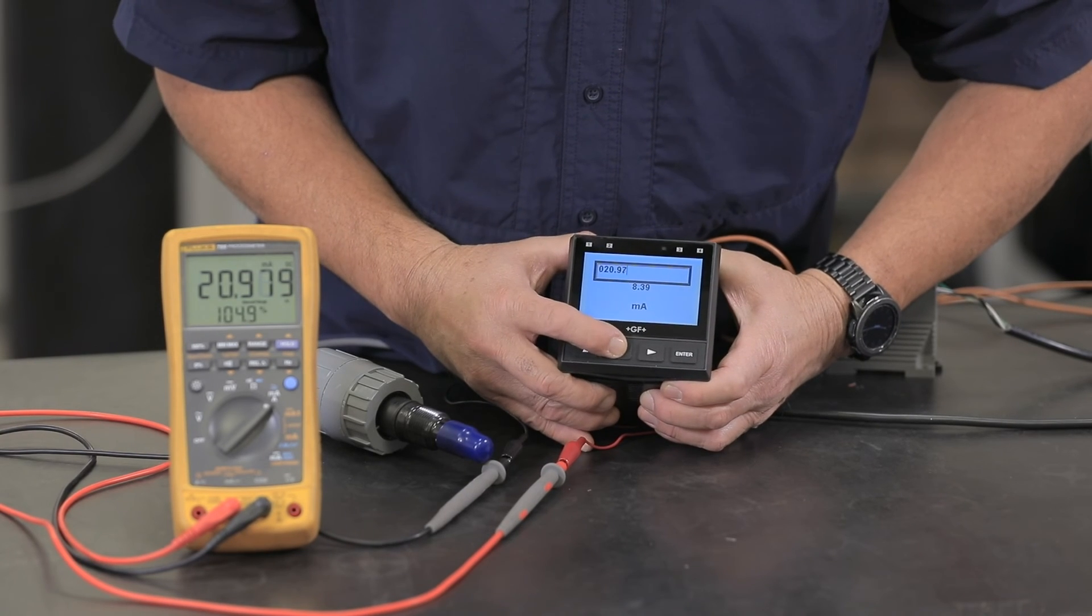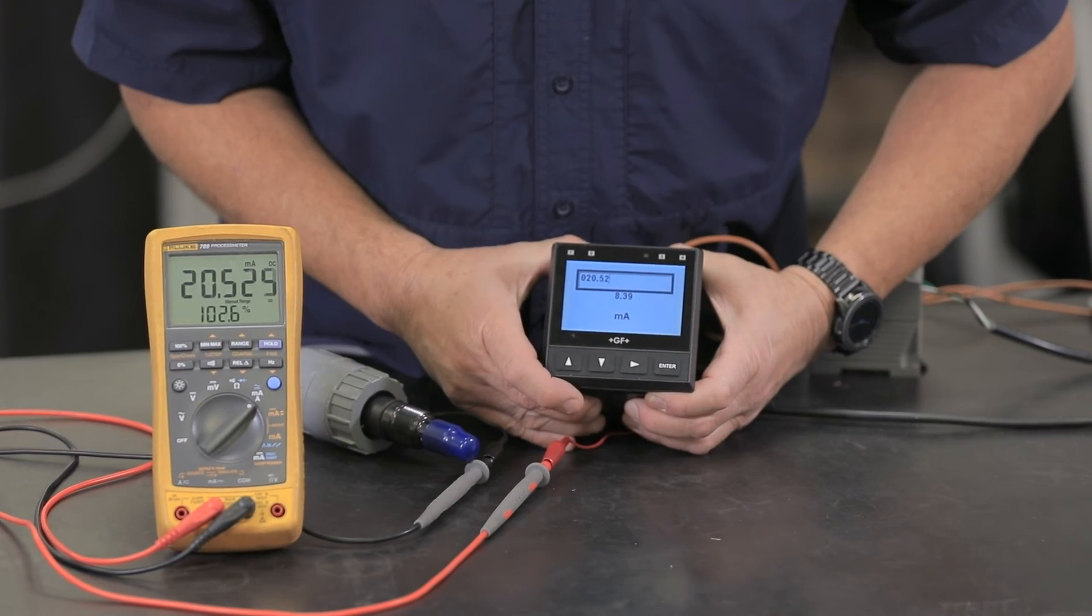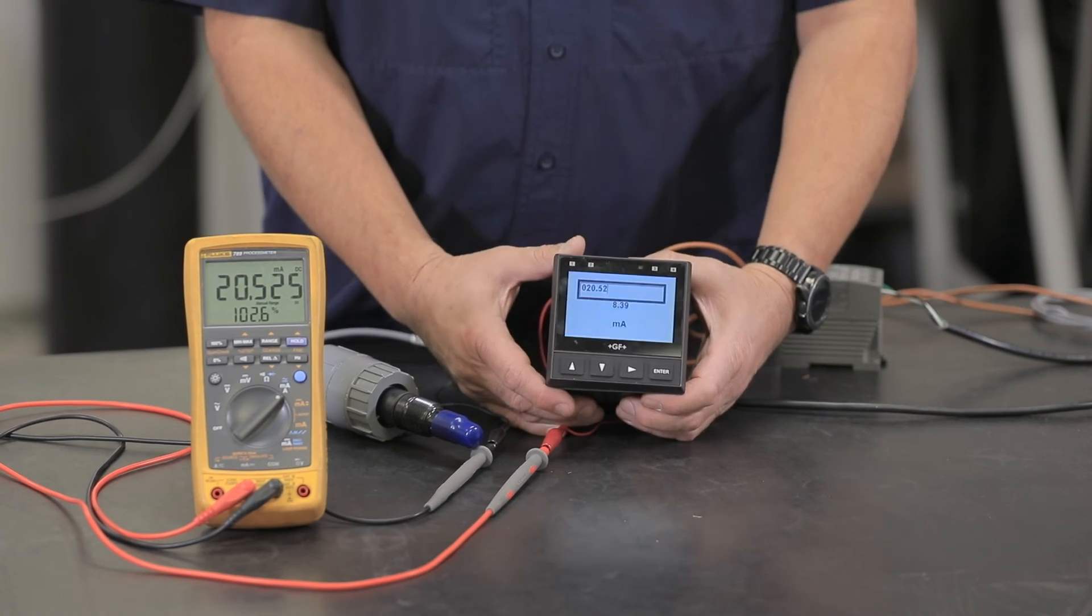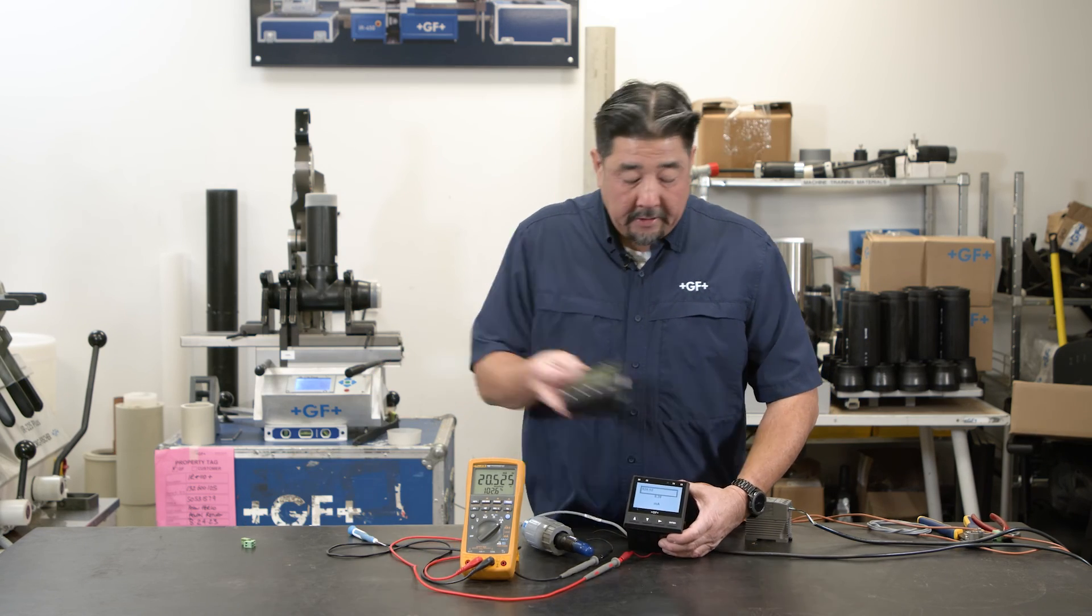So right now it's at 20 milliamps. Yeah, 20.95 milliamps, 20.25. Okay, so that's how the test loop works. That's also available on your 9900 as well.